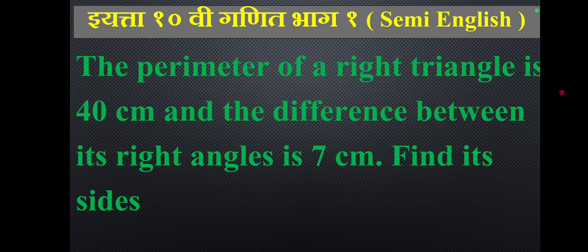The perimeter of a right-angled triangle is 40 cm and the difference between its two legs is 7 cm. Find its dimensions.